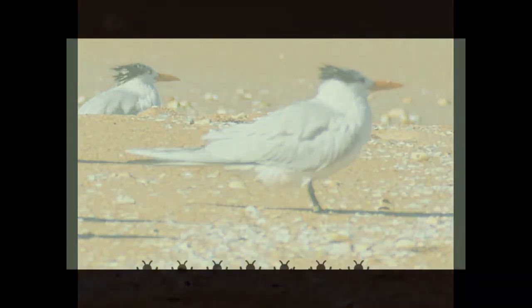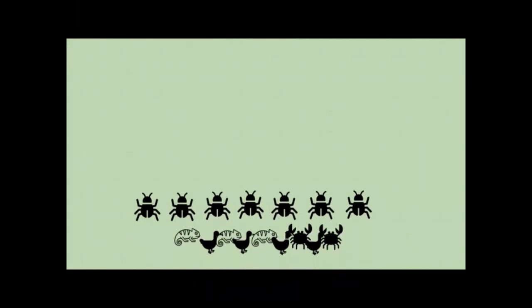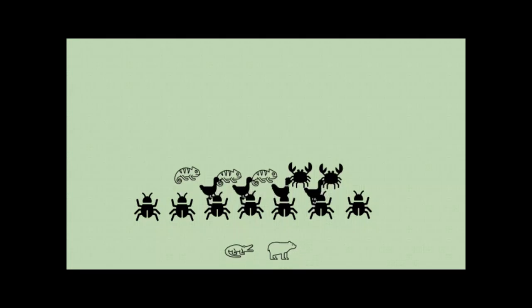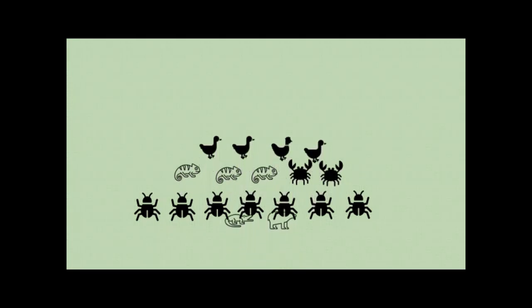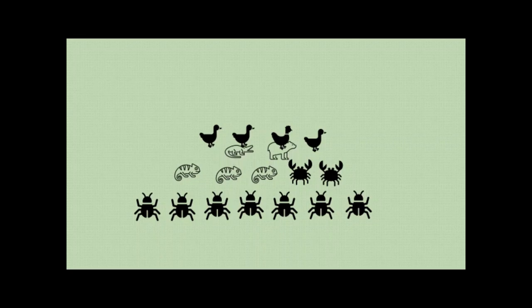A key concept in environmental science is the idea of succession. Succession is a term that describes the long-term progression of biological communities that occurs in a given area. Succession can be further described in terms of its stages: primary, secondary, intermediate, and climax.